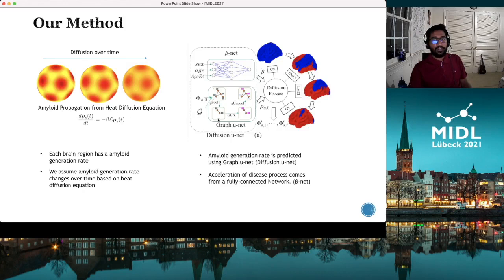We use a graph unit to predict this rho s from initial amyloid burden. And we use a fully connected network, beta net, to predict this beta from various properties like sex, age, and education information of that particular subject. And from those two values, we can predict the future timestamps of amyloid burden.